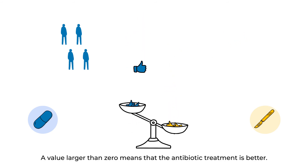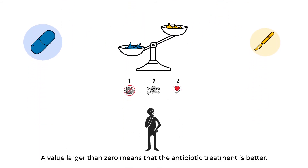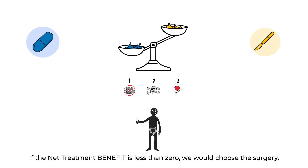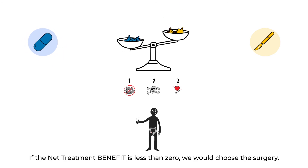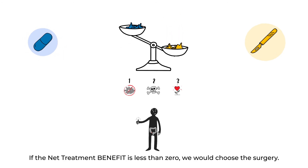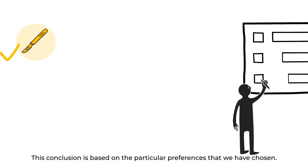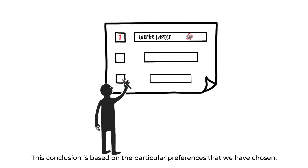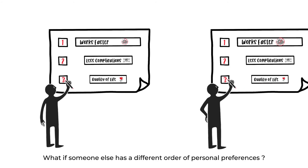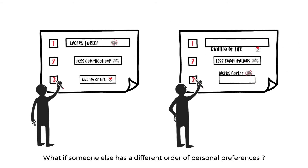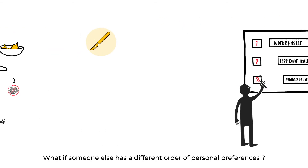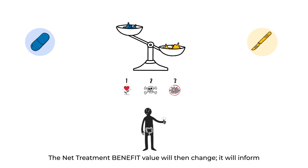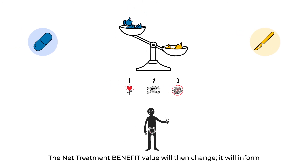The Net Treatment Benefit reflects the difference in the number of times that the treatment with antibiotics was better and the number of times that it was worse than surgery. A value larger than zero means that the antibiotic treatment is better. If the Net Treatment Benefit is less than zero, we would choose surgery. This conclusion is based on the particular preferences we have chosen. What if someone else had a different order of personal preferences? The Net Treatment Benefit value will then change.